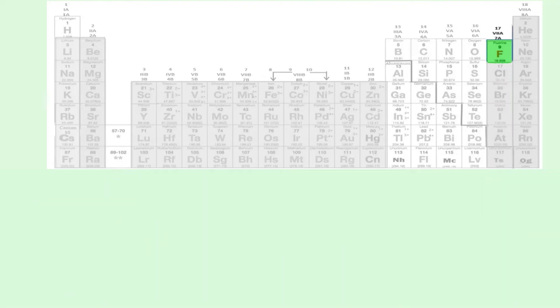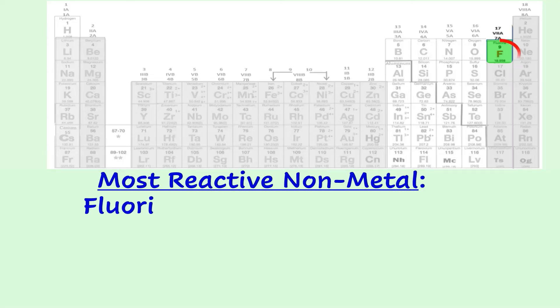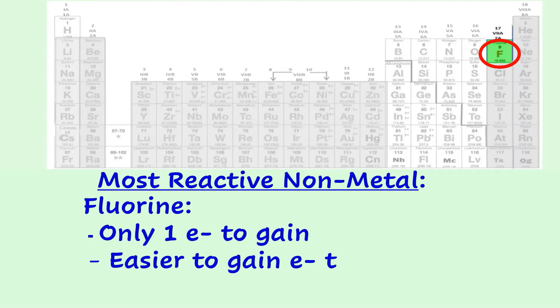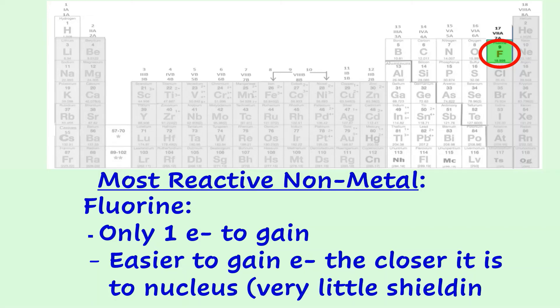While the most reactive metal is at the bottom of the periodic table, the most reactive non-metal is fluorine at the top. The elements at the top of the table have fewer occupied shells, so their valence electrons experience less shielding, which makes it easier for the nucleus to pull in another electron. Since fluorine only has to gain one electron, and it's going into the second shell close to the nucleus, it's the most reactive of the halogens.